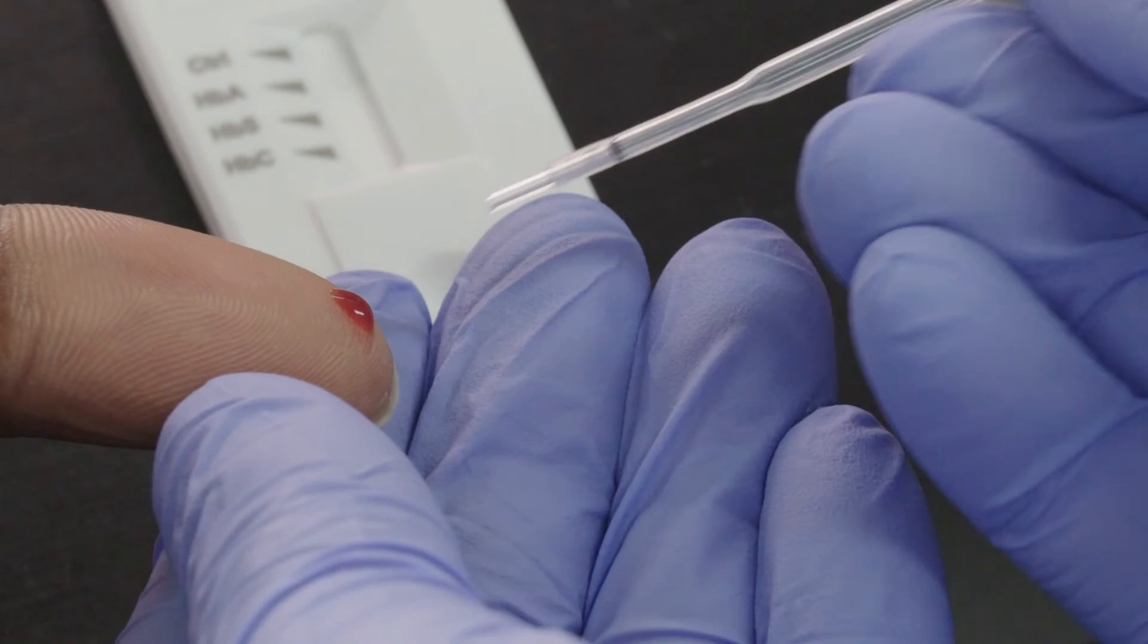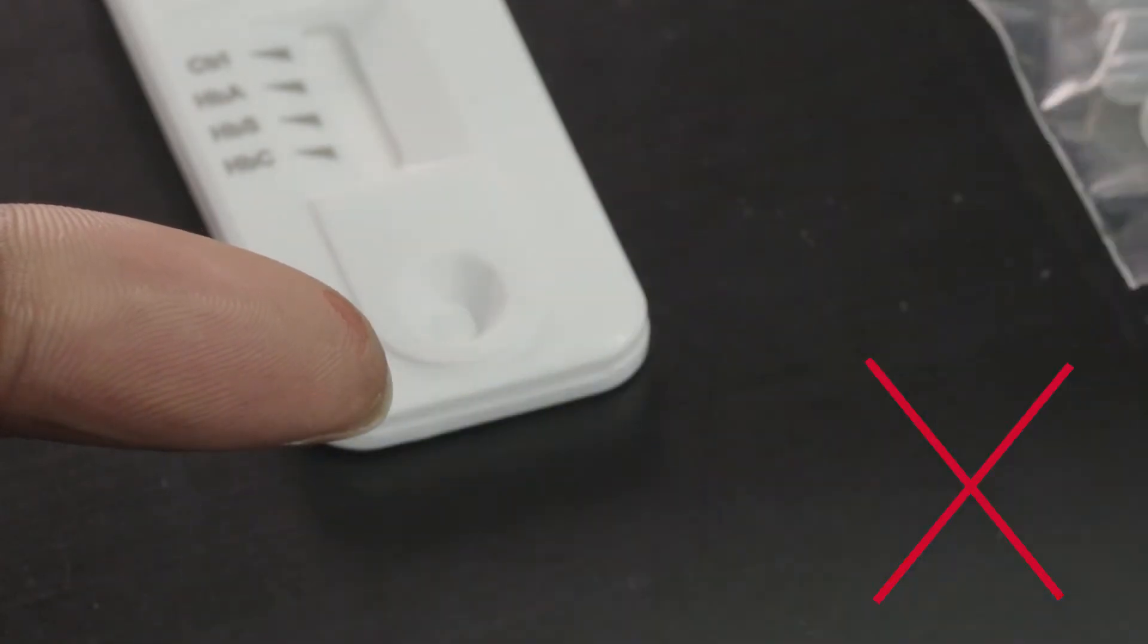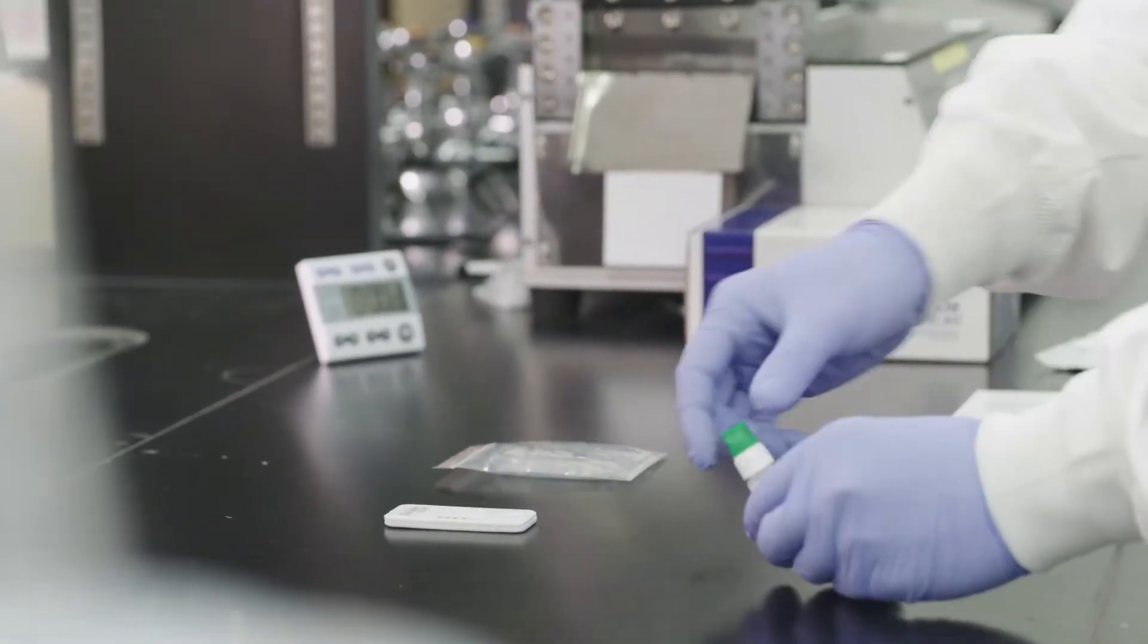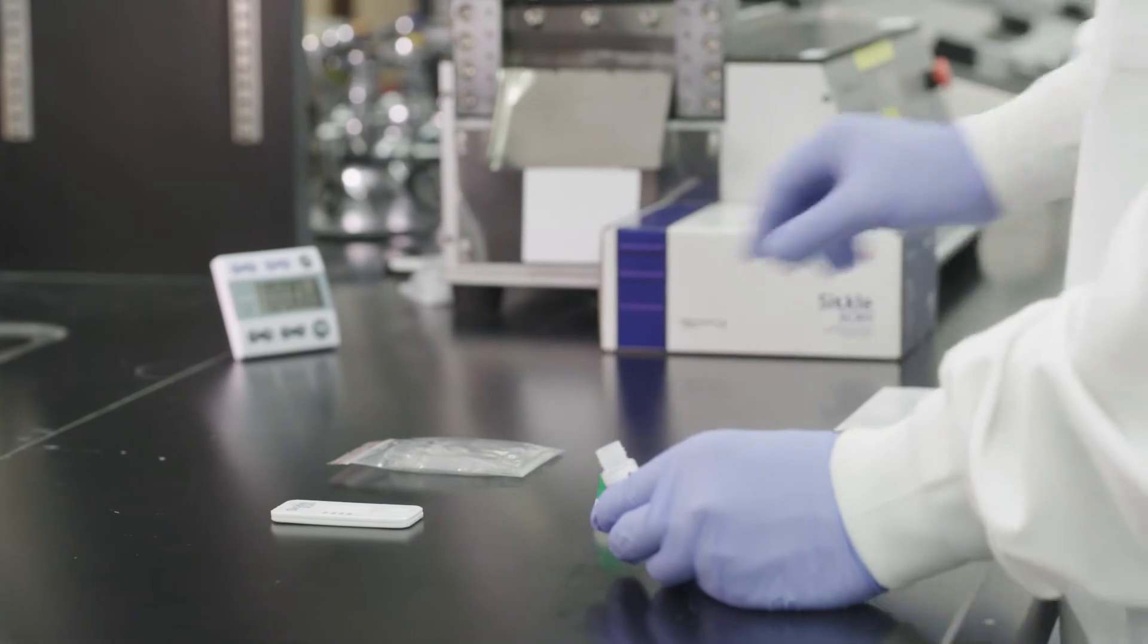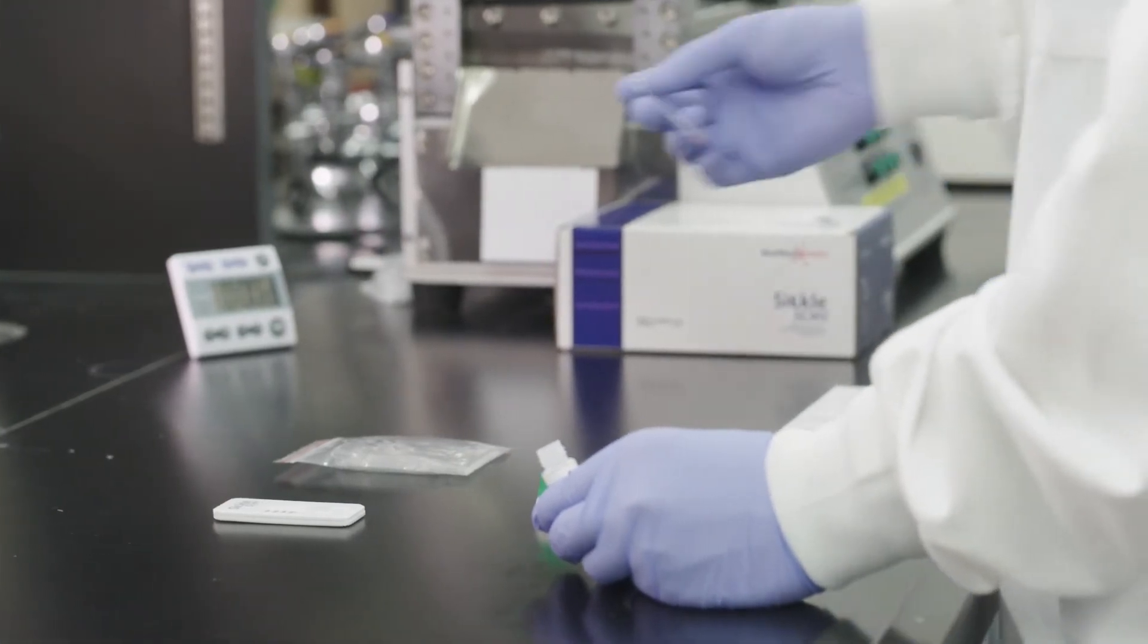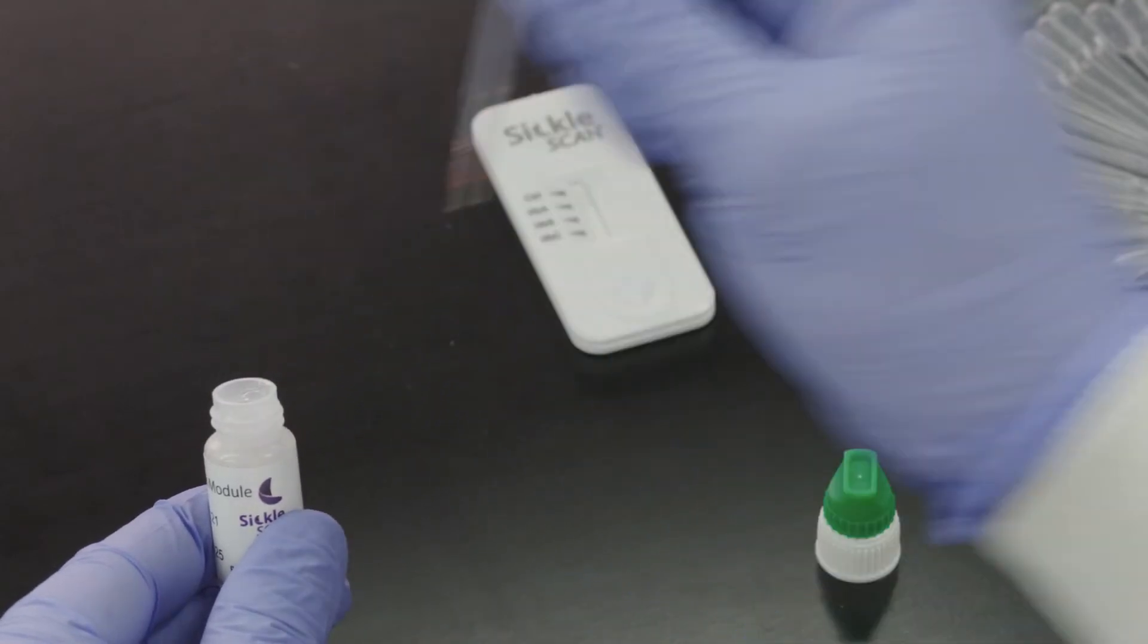Do not squeeze the sampler bulb, as doing so may aerate the blood, causing the sampler to underfill. Open the pre-treatment module by unscrewing the white portion of the cap, then immerse the sample tip into the liquid, release the sample, and screw the two-piece cap back onto the buffer.